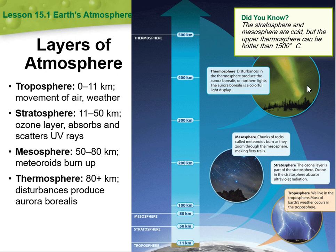The stratosphere contains the ozone layer, which absorbs ultraviolet radiation. In the troposphere, we live and most of Earth's weather occurs.